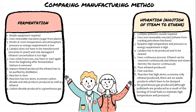For hydration: complex pressure vessels are required, and it uses non-renewable reactants obtained from cracking petroleum fractions. High temperature and pressure are needed, so energy requirements are high, and the catalyst must be produced and cleaned. Hydration uses a continuous process — ethanol can be removed continuously and ethylene and steam are fed into the reactor continuously. The product is pure ethanol and the reaction is very fast, with high atom economy and only ethanol produced — no waste products. No greenhouse gas is produced directly, although pollutants are produced from burning fossil fuels to maintain high temperature and pressure.